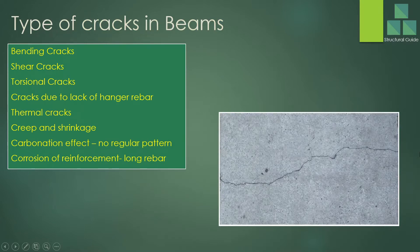Types of cracks in beams: bending cracks, shear cracks, torsional cracks, cracks due to lack of hanger reinforcement — this we will discuss in detail — thermal cracks, creep and shrinkage cracks, and carbonation effects. How does carbonation cause cracking of concrete? Corrosion of reinforcement — how does it lead to cracking? Those things will be discussed today.